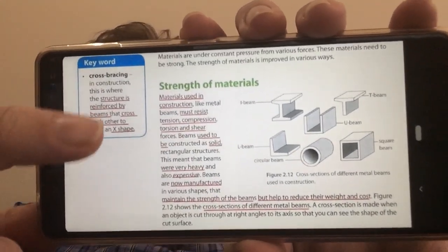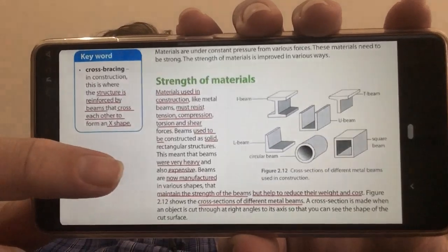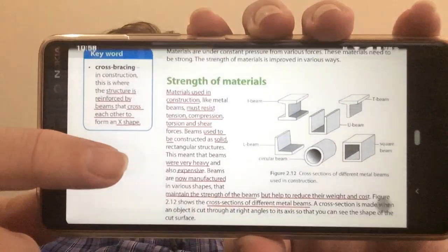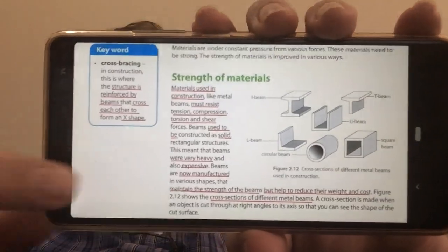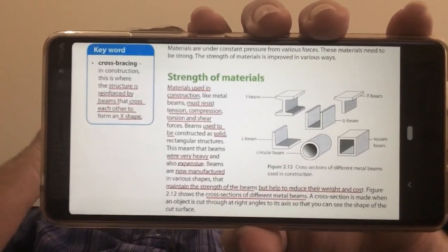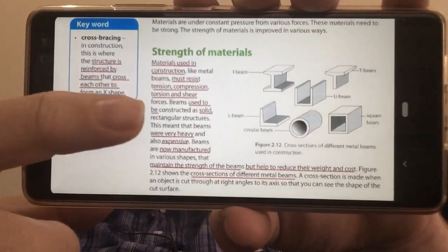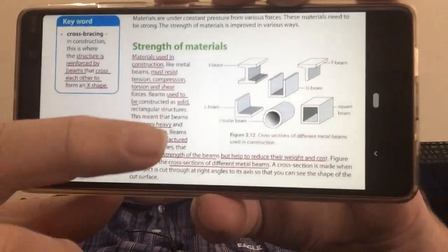First little thing that they mentioned here on the side is talking about cross bracing. We'll see a little picture of it just now. But basically the idea is structures that cross each other in an X shape and they just add a whole lot of strength and reinforce the structure.